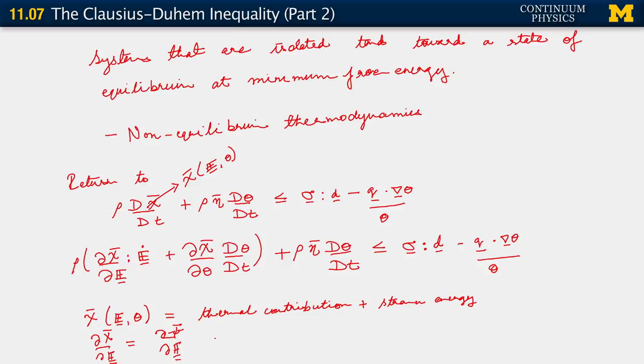When we do this, what it suggests is that we can view the derivative of chi bar with respect to E as being the same as the derivative of psi bar with respect to E, where psi bar is our free energy density.